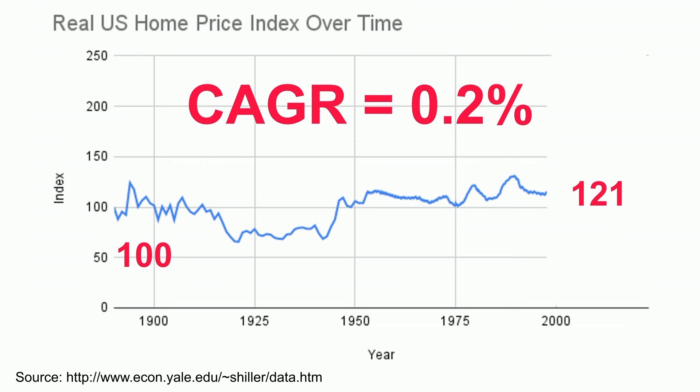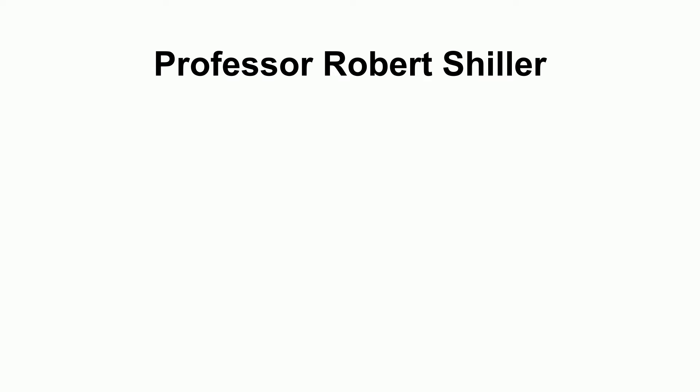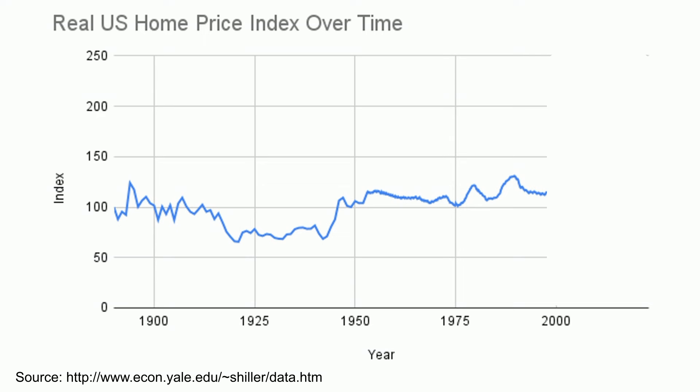Where does this data come from? It comes from Professor Robert Shiller. Professor Shiller won a Nobel Prize in economics. He's also the Shiller in the Case-Shiller U.S. National Home Price Index. I ask that you notice something about this chart: there is an established mean near a compound annual growth rate of 0 and a relatively tight variance around said mean.